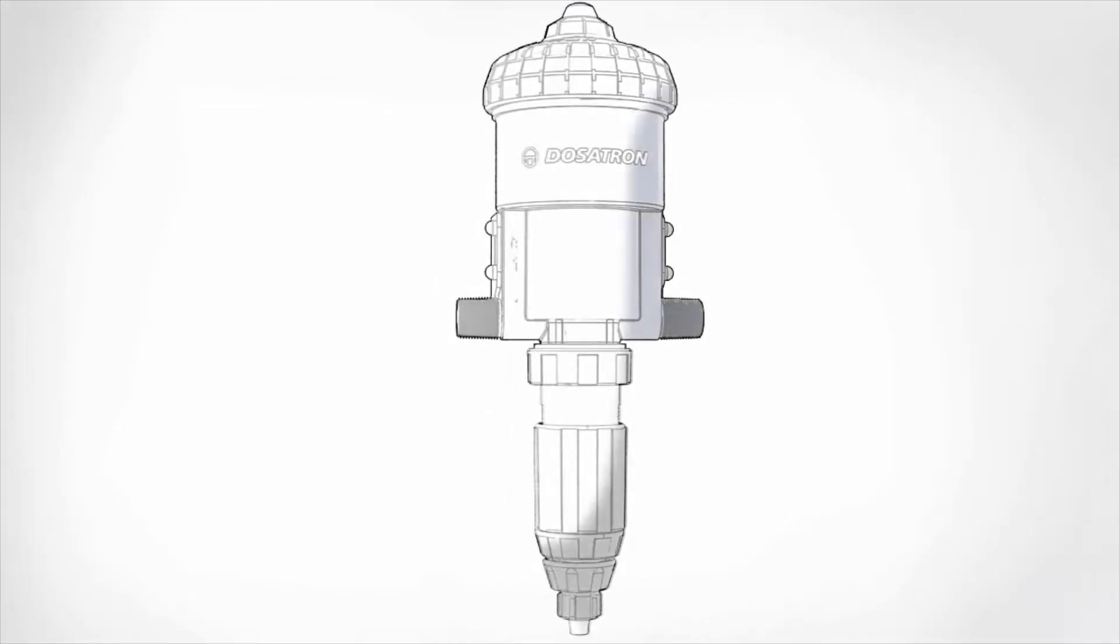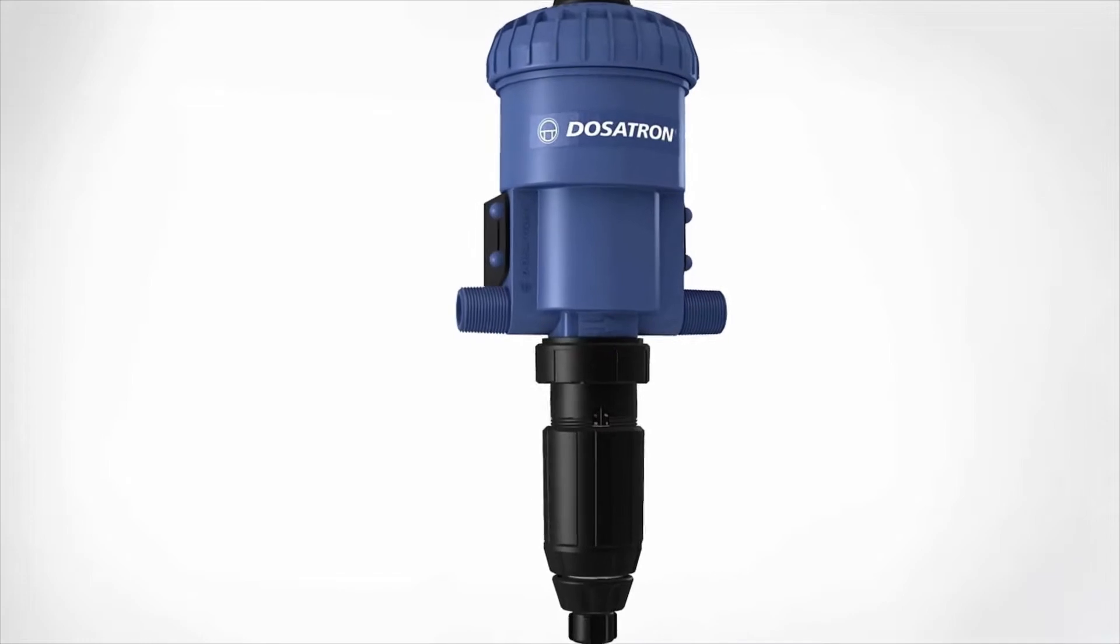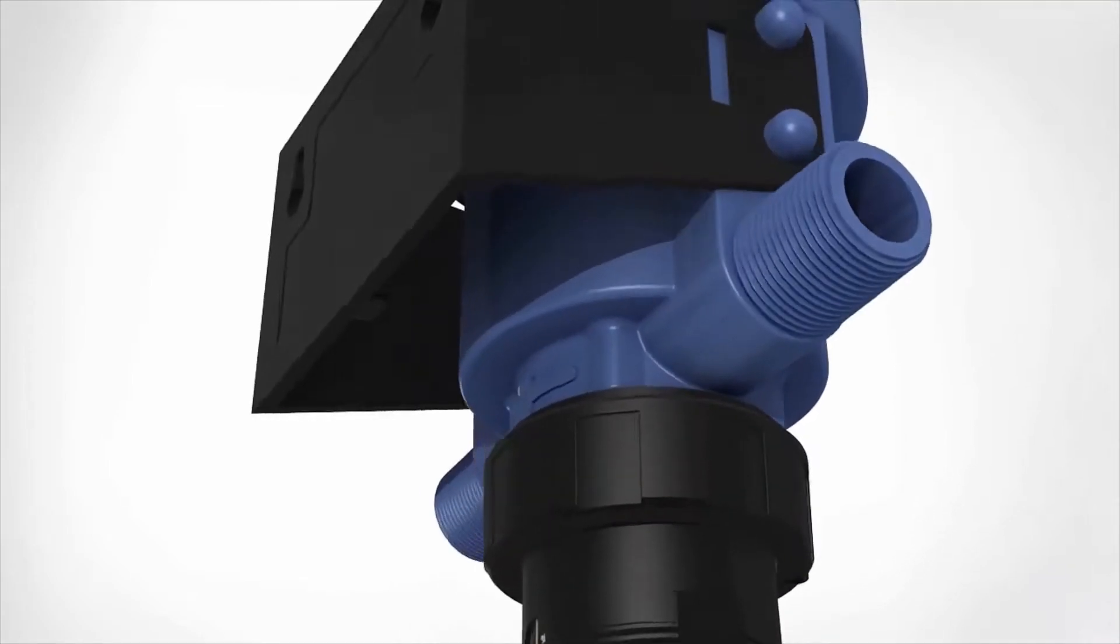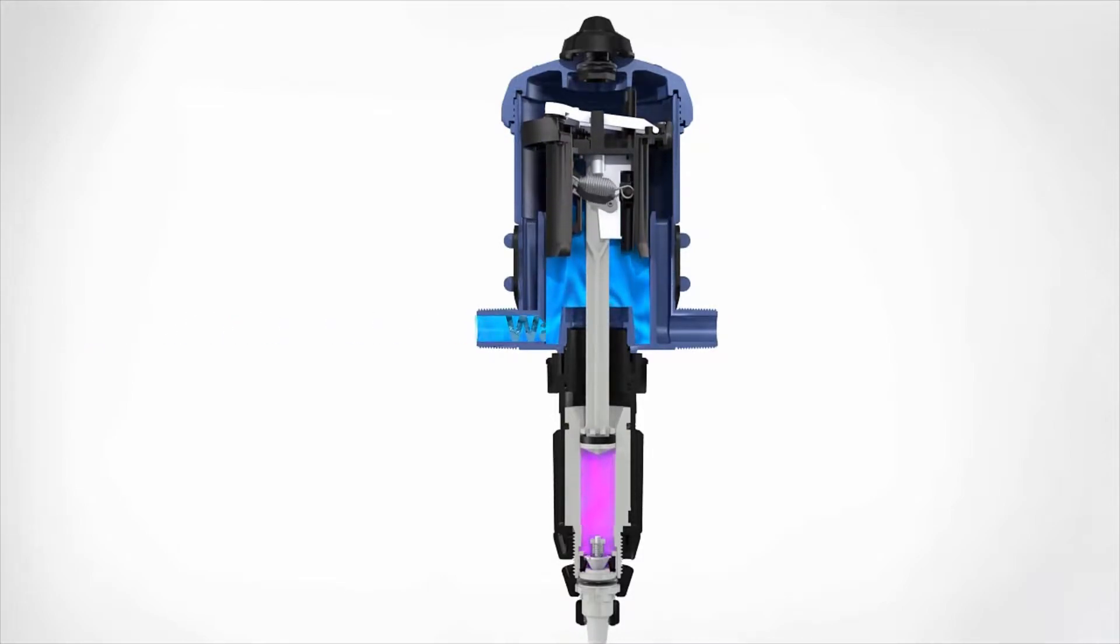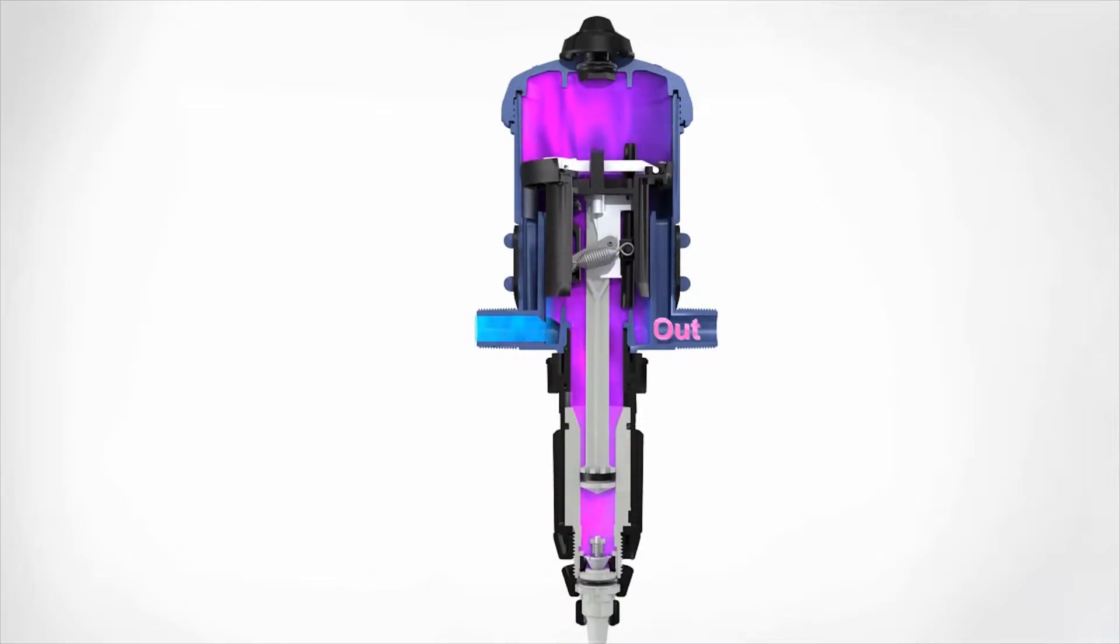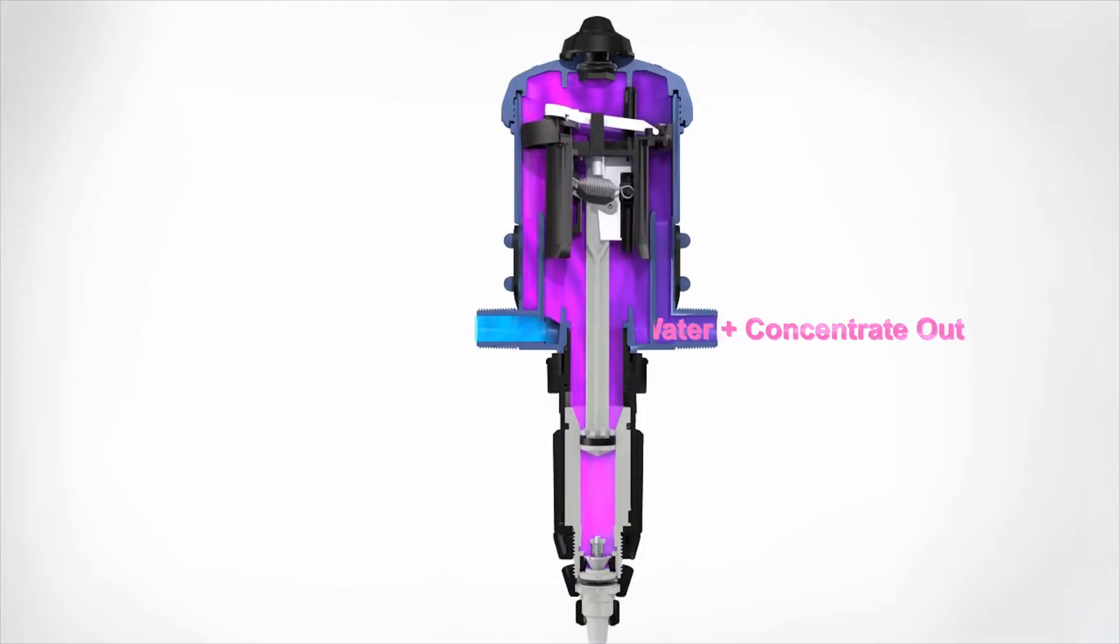The Dosatron D25 series was engineered and constructed of high-quality Delrin and is compatible with an array of concentrated products. When water enters the Dosatron unit, the hydraulic motor moves up and down. This action draws up concentrate and displaces it into the water line.